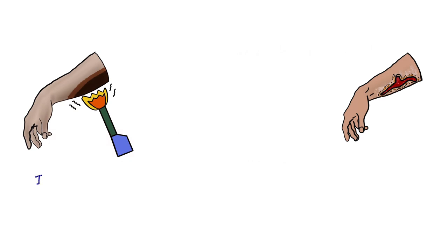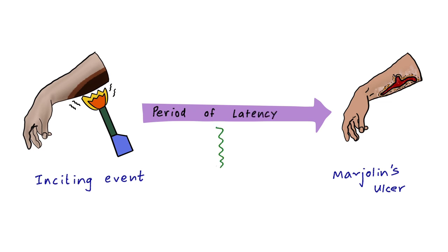Usually, between the inciting event and development of Marjolin's ulcer lies a period of latency. It is in this period of latency where mutations add up and ultimately lead to the formation of Marjolin's ulcer.